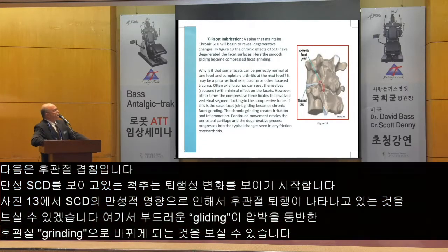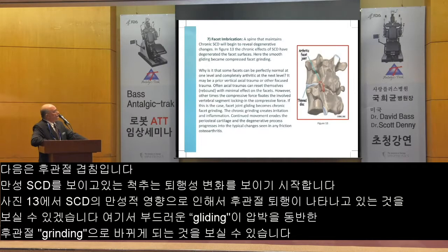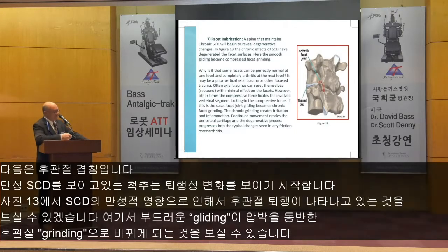Facet imbrication. A spine that maintains chronic spinal compression disorder will begin to reveal degenerative changes. In Figure 13, the chronic effects of SCD have degenerated the facet surfaces. The smooth gliding became compressed facet grinding.